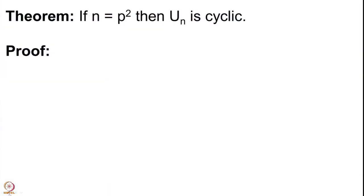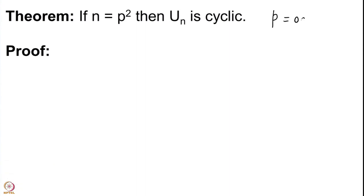Welcome back. We are proving that U(n) is cyclic whenever n is a power of an odd prime p. Our baby step is to show that U(p²) is cyclic. We proved that U(p) is cyclic for all primes p, and using that we want to show that whenever p is an odd prime, U(p²) is cyclic. Remember that p will always be an odd prime for this lecture and perhaps the next. I have told you the plan of this proof, so let me quickly go through it.